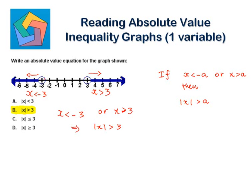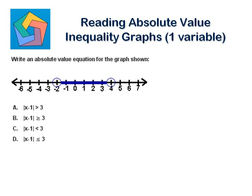Next problem: write an absolute value equation for the graph shown. Here, the values are lying between negative 2 and 4. So we can say negative 2 is less than x is less than 4. Now I need a value which is equal in magnitude but opposite in signs on both sides. So I will take the median of these two extreme values — that is negative 2 plus 4 divided by 2, which is 2 by 2, which is 1.